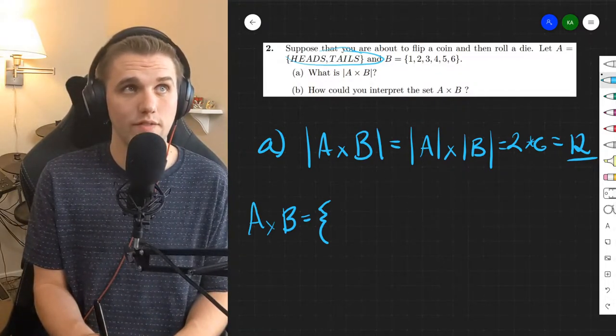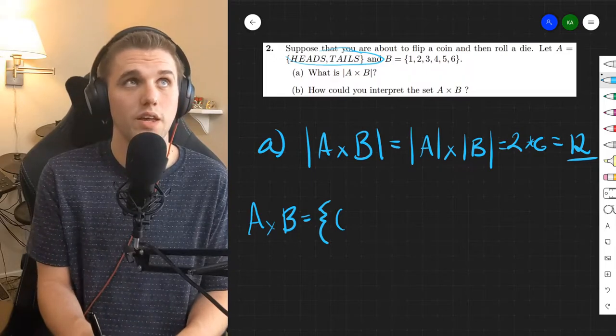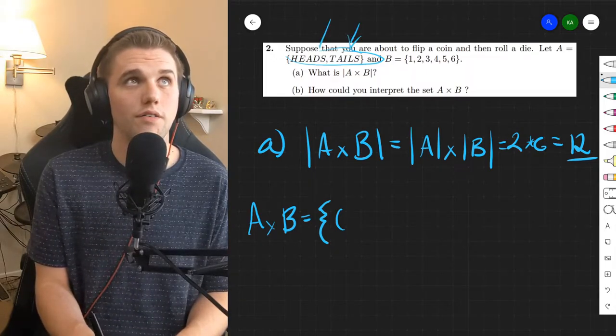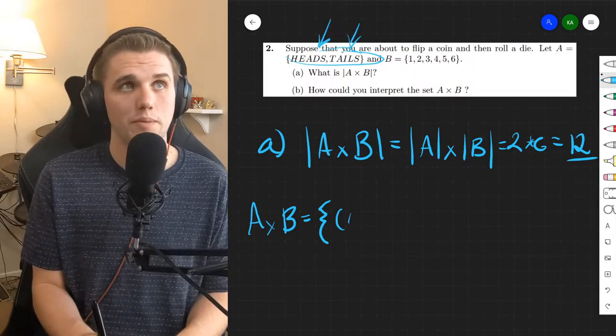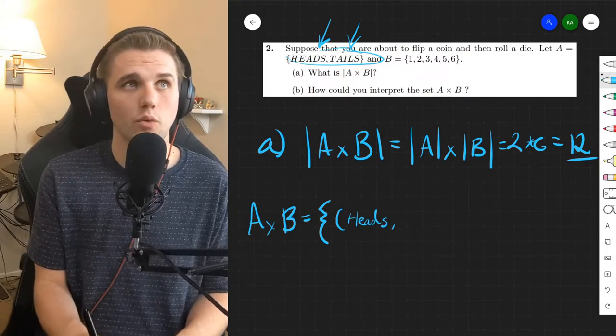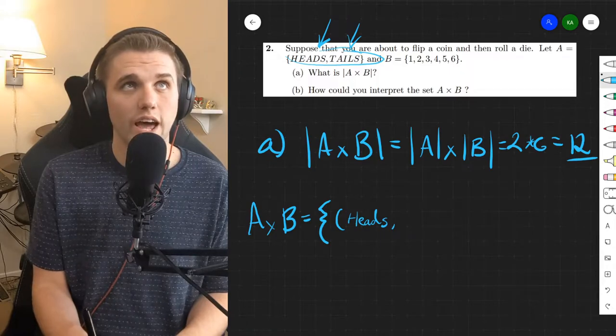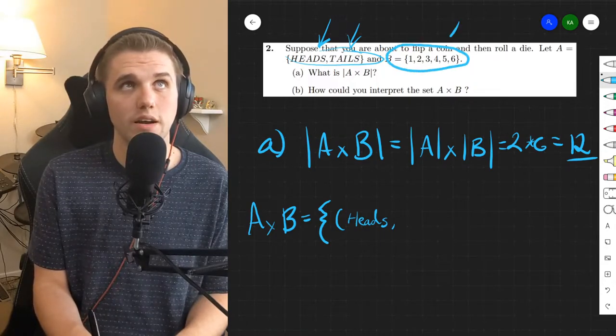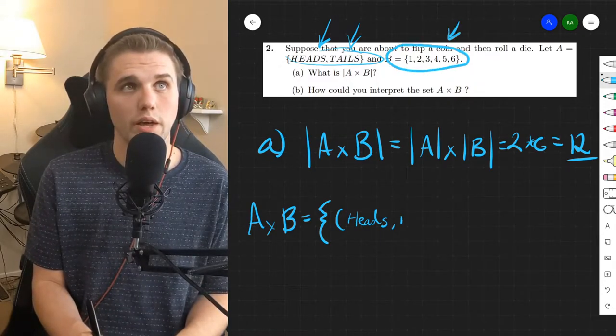And so in this case we have a bunch of ordered pairs where the first element is an element of A. And so I'm going to pick heads. And then we go through every single possibility here where the second element comes from the set B here. And so you can pick like one for example.